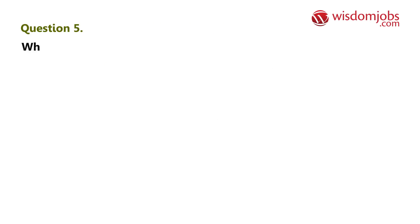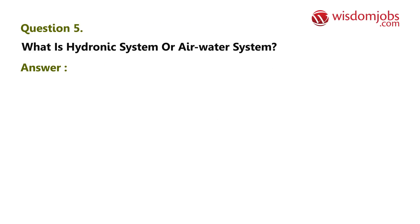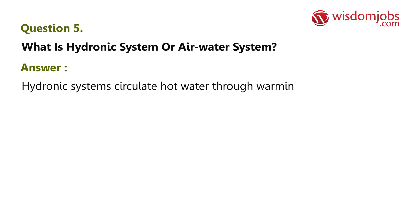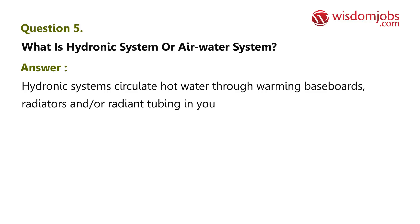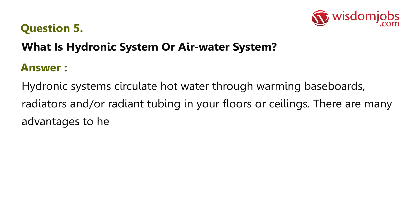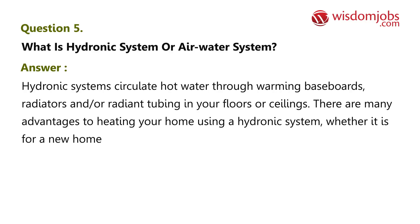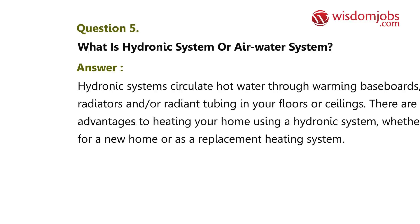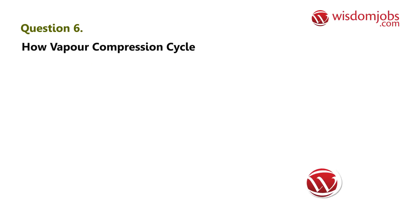Question 5: What is a hydronic system or air water system? Answer: Hydronic systems circulate hot water through warming baseboards, radiators, and/or radiant tubing in your floors or ceilings. There are many advantages to heating your home using a hydronic system, whether it is for a new home or as a replacement heating system.